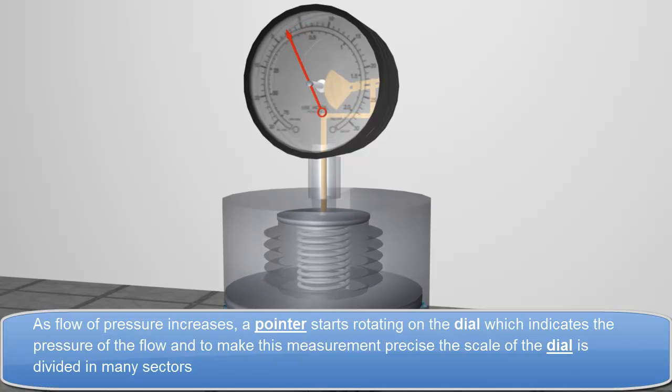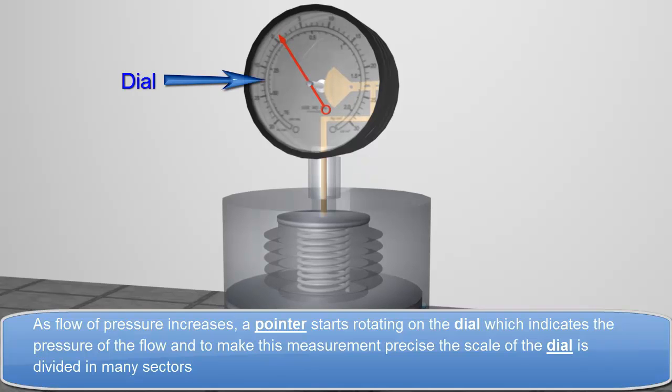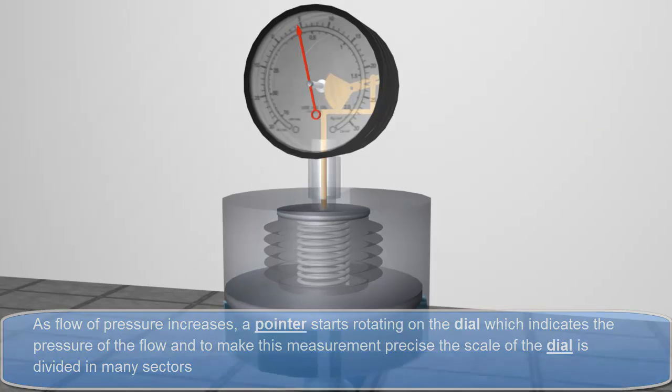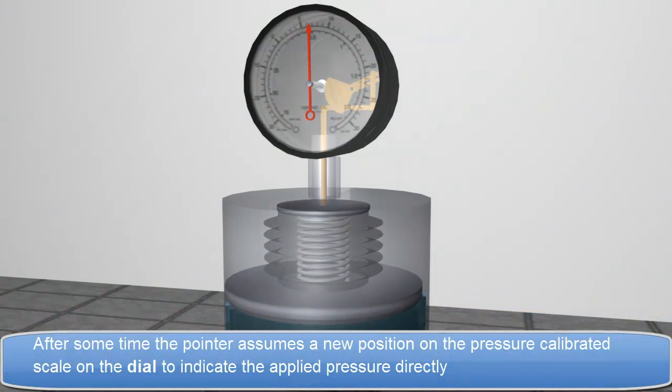And to make this measurement precise, the scale of the dial is divided in many sectors. After some time, the pointer assumes a new position on the pressure calibrated scale on the dial to indicate the applied pressure directly.